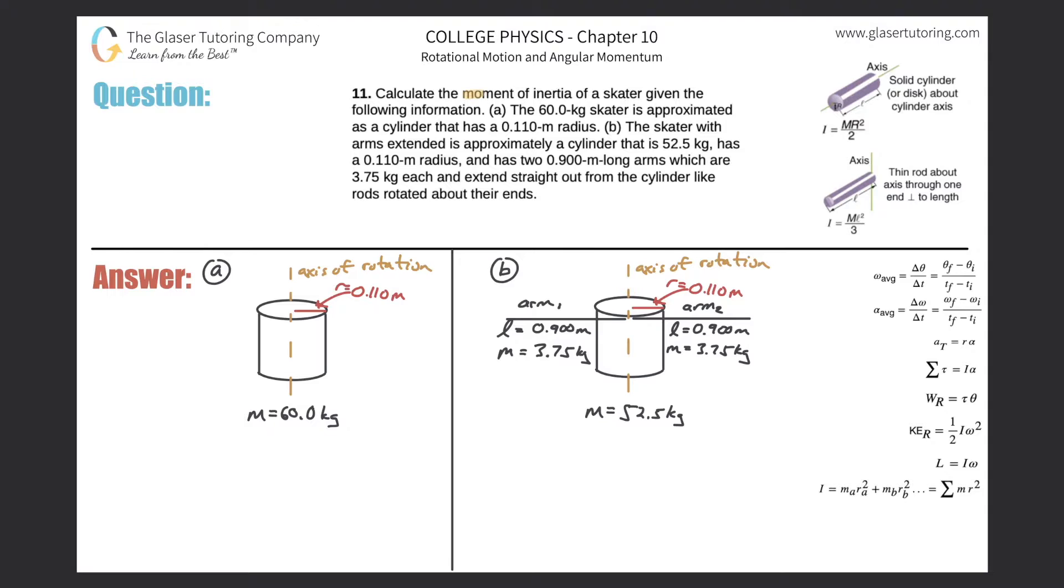Number 11: Calculate the moment of inertia of a skater given the following information. Letter A: The 60 kilogram skater is approximated as a cylinder that has a 0.11 meter radius. So I drew a little picture.